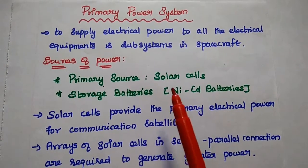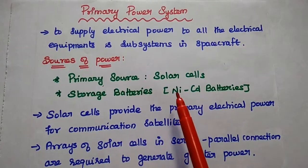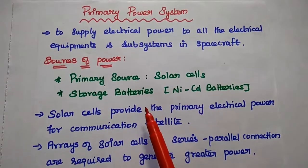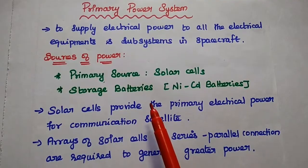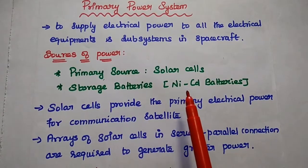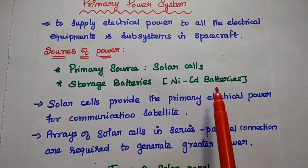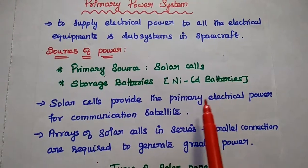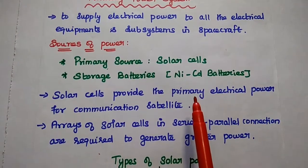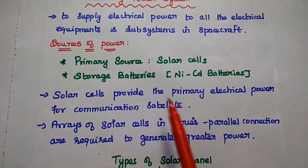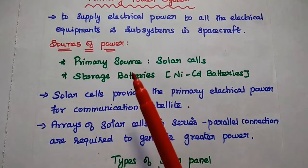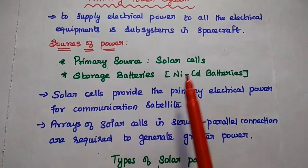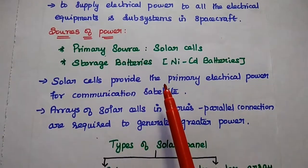During the eclipse period, solar cells do not work. At that time, storage batteries like nickel-cadmium batteries are used to provide electrical power for the communication satellite. So there are two sources: one is solar cells, and the next one is storage batteries.